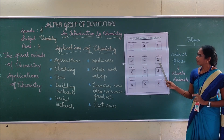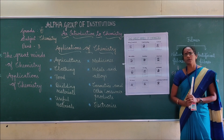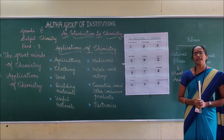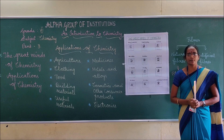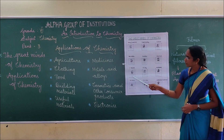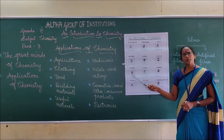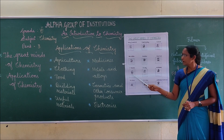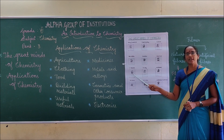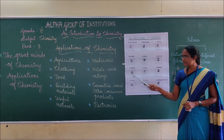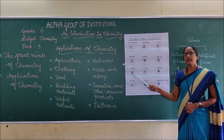Next: Marie Curie. Marie Curie is most famous for the discovery of the elements radium and polonium. Next: J.J. Thomson. He was a British physicist. He is credited for the discovery of the electron. J.J. Thomson discovered the electron.